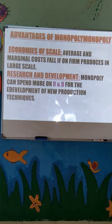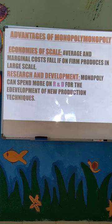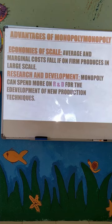In a monopoly market, a monopolist can attain economies of scale because the average and marginal costs fall when the firm produces on a large scale. In a monopoly, there is only one single firm in the market, so they produce at large scale. As a result, the average cost and marginal cost will reduce, and they can attain economies of scale.